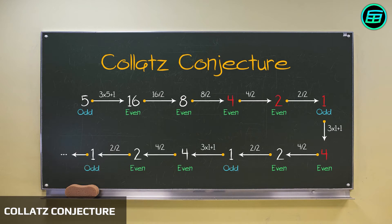The problem is, no one has been able to prove that the Collatz Conjecture is true for all integers. And no one has found an integer that doesn't end in the 4, 2, 1 loop.